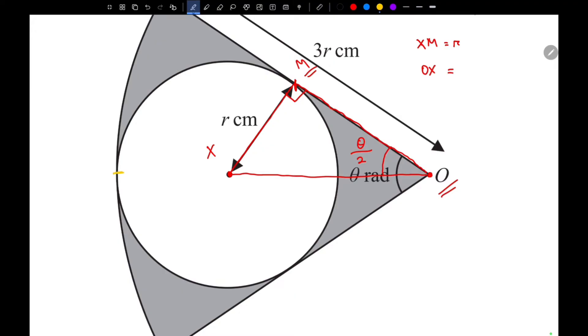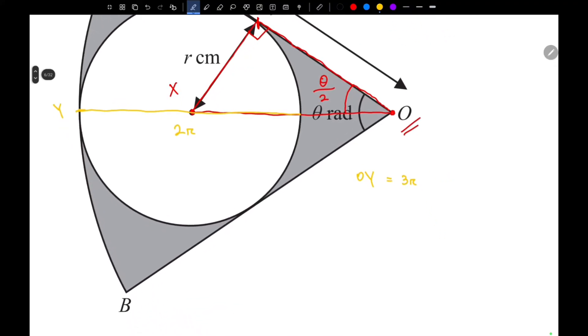Let's call this point point Y. Now we know the length of this to be 2R, and the whole length of OY is actually 3R. So the length of OX will be 2R.